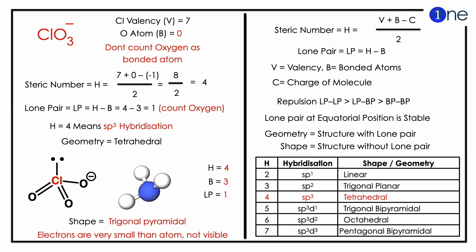H equals 4 means sp³ hybridization with tetrahedral geometry, but you have one lone pair in the system, which will occupy a corner.